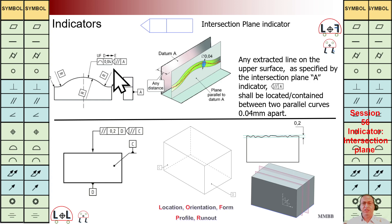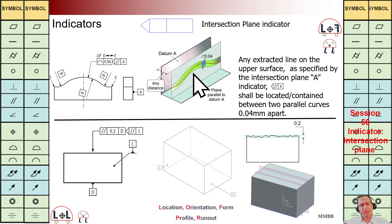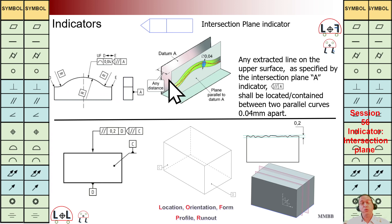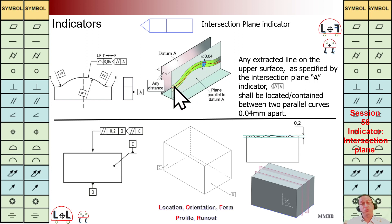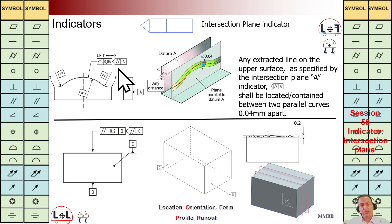Parallel to A. We are going to have several planes parallel to A — A is here. We need to extract the curve between the top surface and those parallel planes. For each of them we are going to extract the curve. That curve should be between two parallel curves with this tolerance zone Tz 0.04. We extract the curve using this symbol, and that extracted curve should be within this Tz.